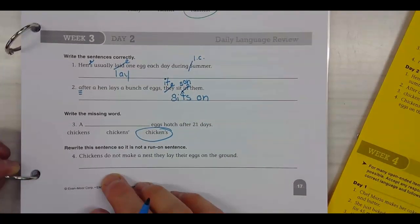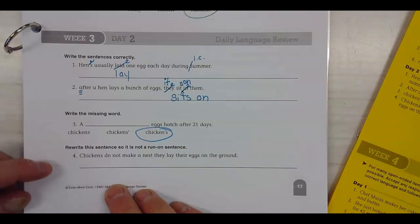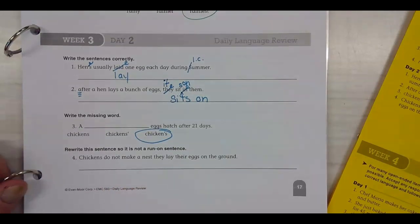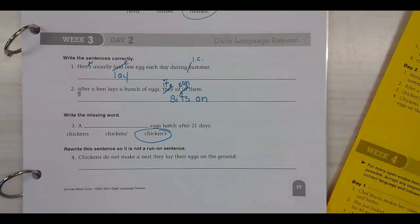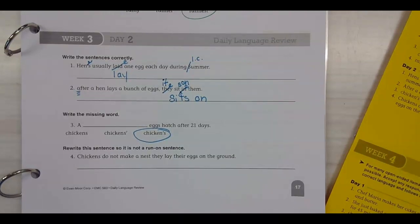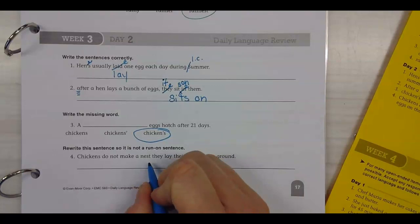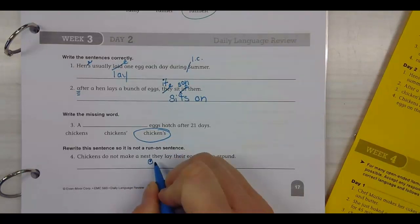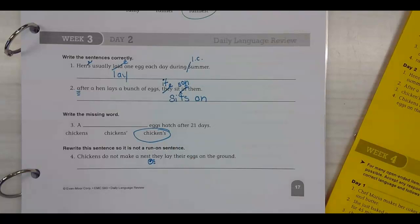Rewrite this sentence so it's not a run-on. Chickens do not make a nest. They lay eggs on the ground. There should be a comma in between a and a nest. No, but you're really on the right track. Period after nest. And if I put a period after nest, then what do I have to do with they? Capital T and they. Good job.